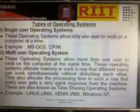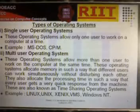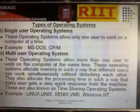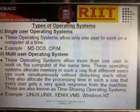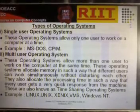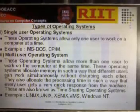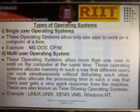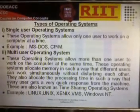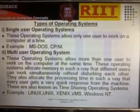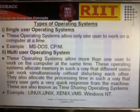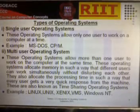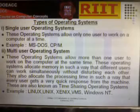Types of Operating Systems. There are two types of Operating System: Single User Operating System and Multi User Operating System. A Single User Operating System allows only one user to work on a computer at a time.